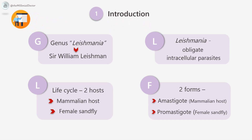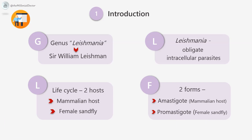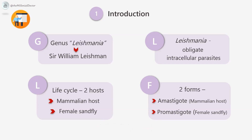Introduction: The genus Leishmania is named after Sir William Leishman, who discovered the flagellate protozoa causing Kala azar — the Indian visceral leishmaniasis, also called VL. All members of the genus Leishmania are obligate intracellular parasites that pass their life cycle in two hosts: the mammalian host and the insect vector, which is the female sandfly. In humans and other mammalian hosts, they multiply within macrophages, occurring exclusively in the amastigote form.